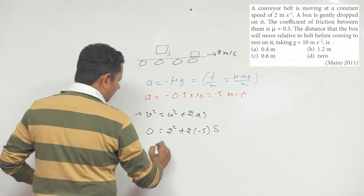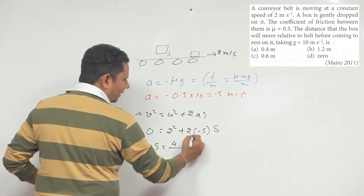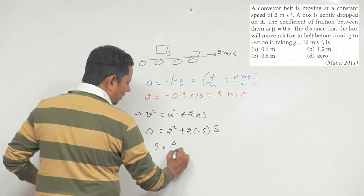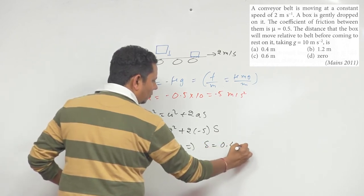If we solve this, s equals 2 square, that is 4 divided by 2 into 10, equals 10. This implies s equals 0.4 meter.